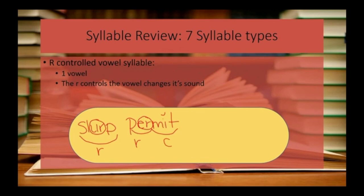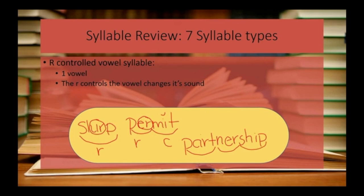One last example is the three-syllable word partnership. In this word, two of the syllables have R-controlled sounds. The first R-controlled sound is the AR in part, and the second R-controlled sound is the ER in ner. The last syllable does not have an R-controlled sound — it is a closed sound.